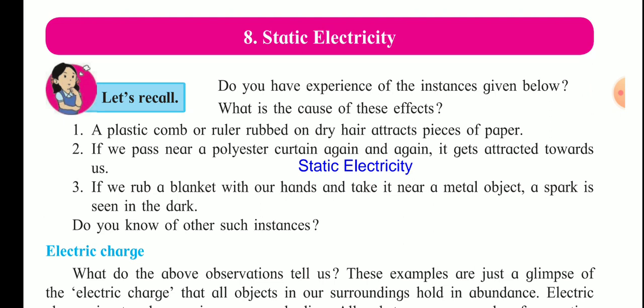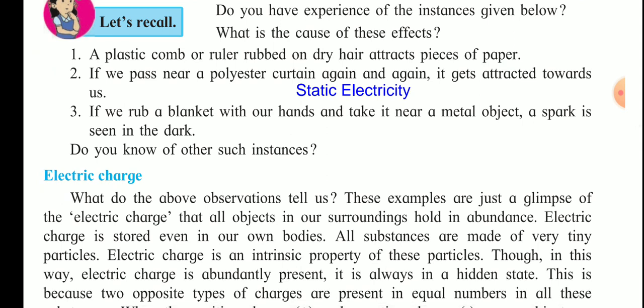A plastic comb or ruler, when rubbed on dry hair, attracts pieces of paper. If we pass near a polyester curtain again and again, it gets attracted towards us. If we rub a blanket with our hands and take it near a metal object, a spark is seen in the dark. Also, when wearing a woolen sweater over a polyester shirt, the hair on your hands raises.